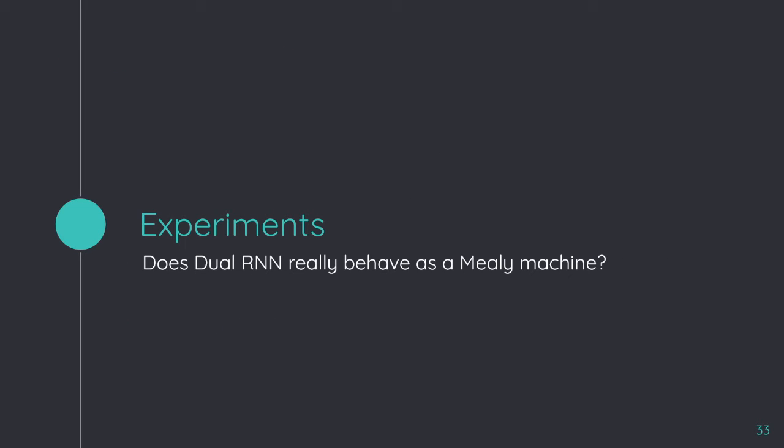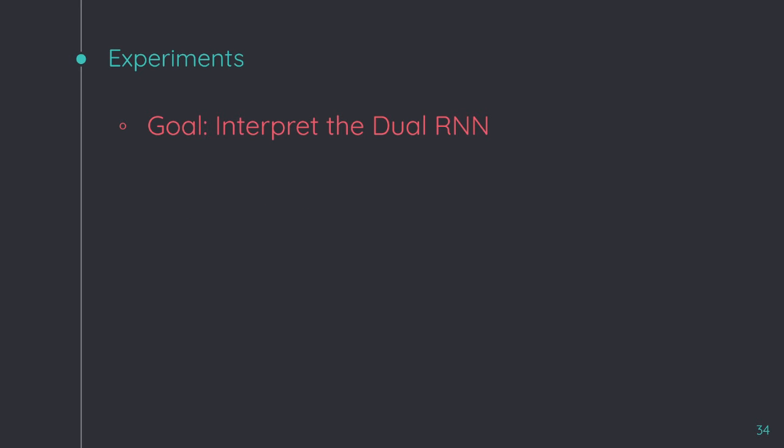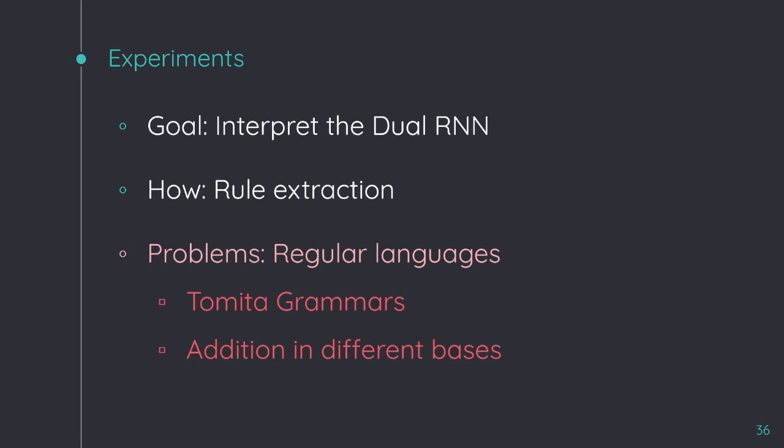The following question is, does the dual recurrent neural network really behave as a Mealy machine? I begin with the experiments. Our main goal is to interpret the dual recurrent neural network as a Mealy machine, and we do it with a rule extraction procedure by using the noise activation function in the recurrent layer. To do this, we are going to learn some regular languages, the Tomita grammars, and the addition of two numbers in different bases.